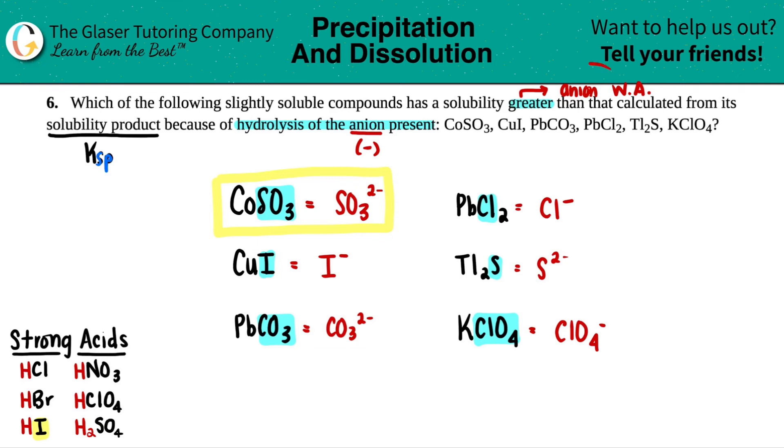And remember, we don't want strong acids. We want weak acids. So this one, no. CO3. Is CO3 one of our anions for our strong acids? I don't see it here. So that means that this has to be a weak acid anion. And that would make the solubility greater.